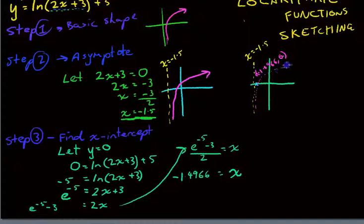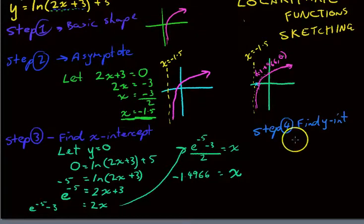Now, the last bit that we need to do is find out where our function crosses the y-axis. And so we can do that by finding the y-intercept. So, step 4. Find the y-intercept. And we always find the y-intercept the same way. Let x equals 0.